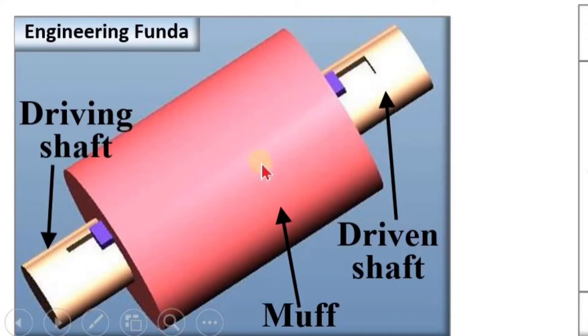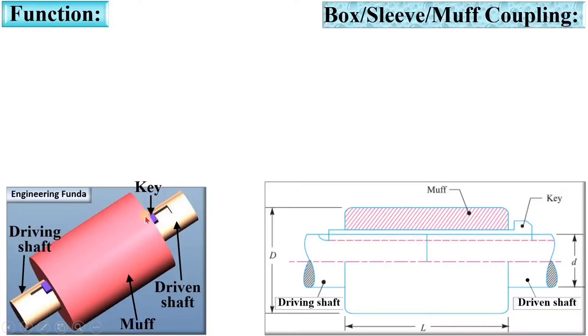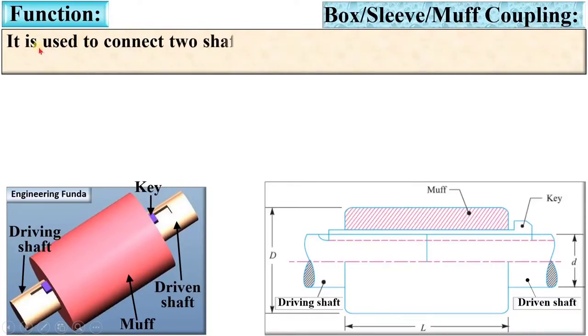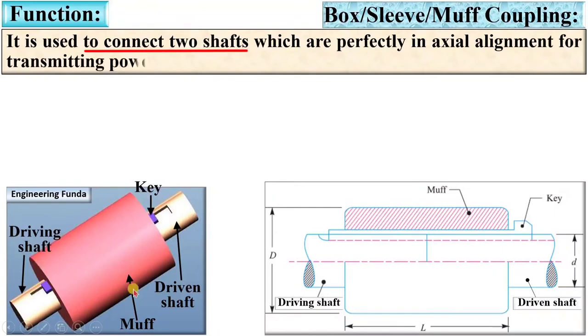This is called the Muff or Sleeve or Box. This is the key. Now see, first of all, the function: it is used to connect two shafts, here you can see Driving Shaft and Driven Shaft, which are perfectly in axial alignment for transmitting power. In this figure also you can see Driving Shaft and Driven Shaft are both perfectly in axial alignment.